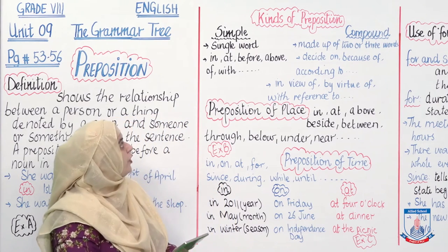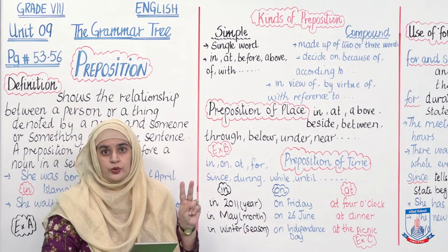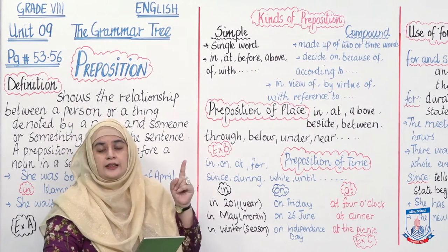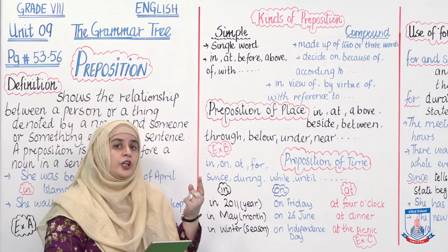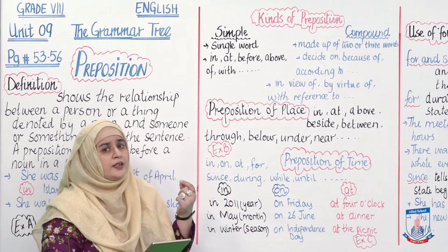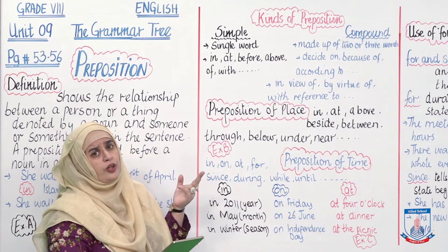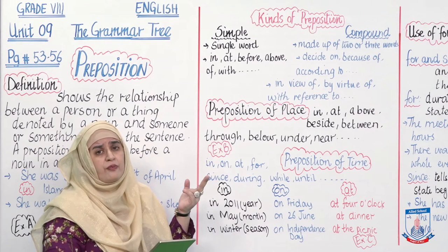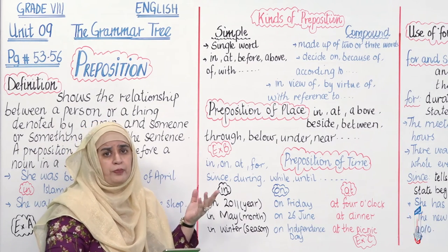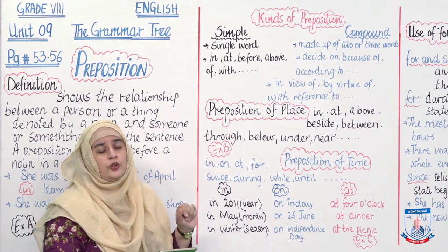Let's move on to the kinds of prepositions. Do tarha ki prepositions hoti hain: ek simple prepositions, ek compound prepositions. Jo simple prepositions hoti hain, wo simple single words hoti hain — jaise: in, on, at, before, until, unless, off, with. Ye sab simple prepositions hain.